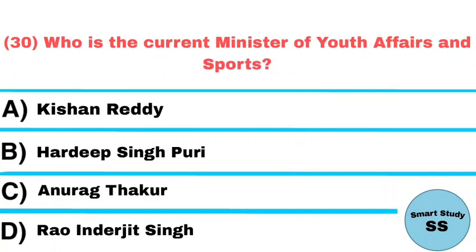Question number 30: Who is the current minister of Youth Affairs and Sports? Answer: Anurag Thakur. Thanks for watching.